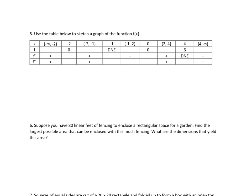Let's move on to number 5. It says: use the table below to sketch a graph of the function f of x. When you're given tables like this, the answers can vary, and we're going to come up with a possible sketch based on what we're given. A good idea first is to put in points you know. From the table, I know I have a point at negative 2, 0; a point at 0, 0; and a point at 4, 6.